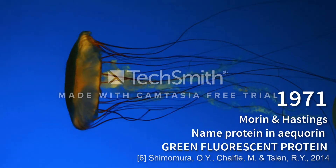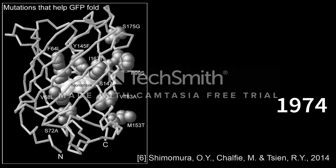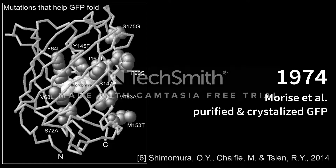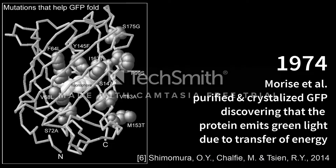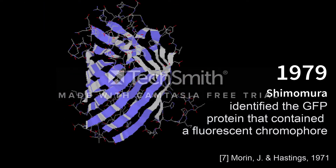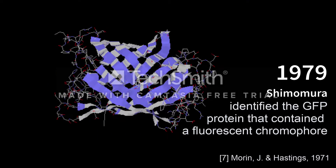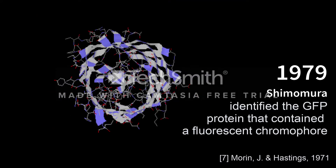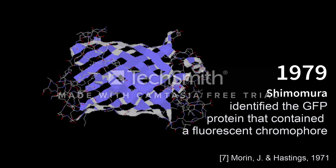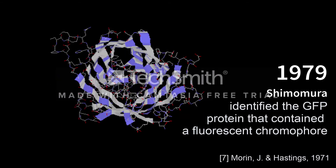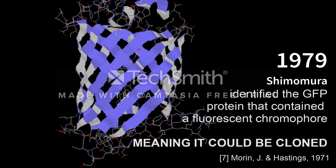It is this photoprotein that they named GFP. In 1974, Maurice et al. purified and crystallized GFP, discovering that the Aequorea light organs contain GFP and the protein Aequorin, and that the GFP protein emits green light due to the transfer of energy from the blue light produced by the Aequorin molecule. In 1979, Shimomura identified the GFP protein that contained a fluorescent chromophore formed from a sequence of three amino acids — serine, tyrosine, and glycine — within the protein molecule, thus proving that the chromophore was actually a part of the polypeptide chain, meaning it could be cloned.